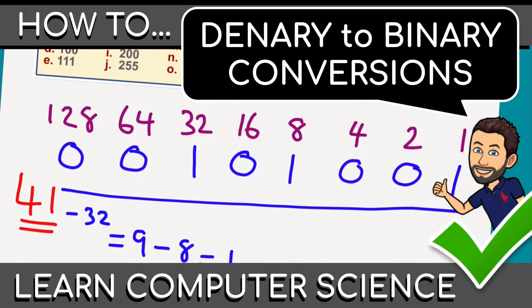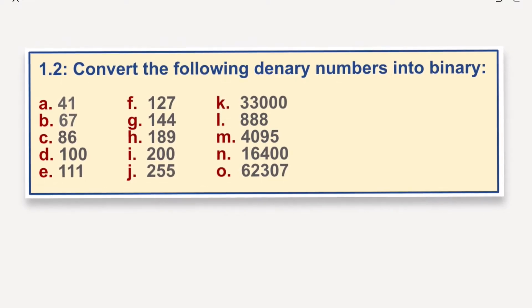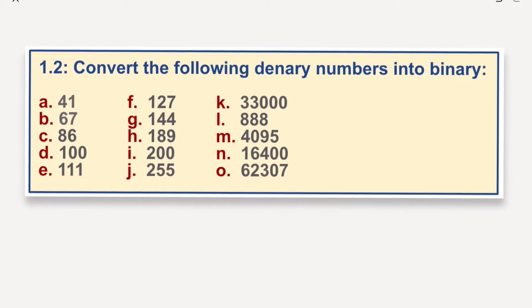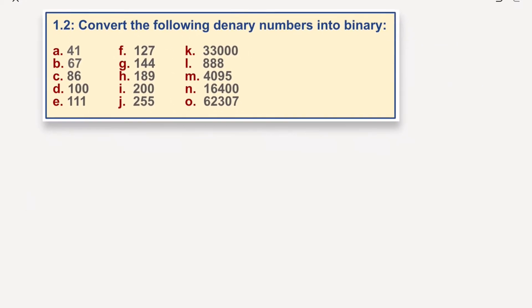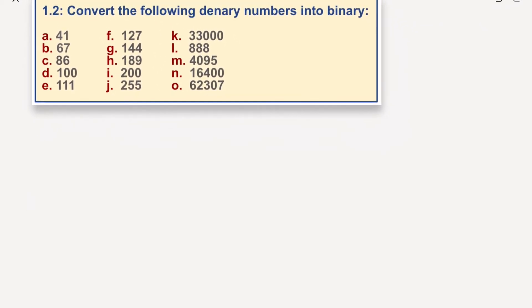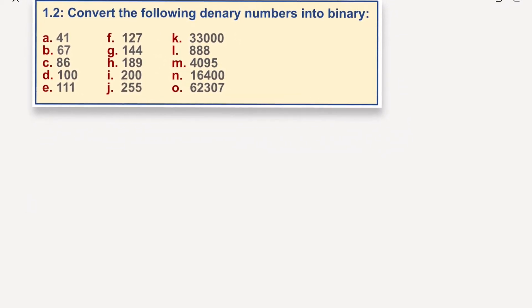We're converting the following denary numbers into binary and we've got several to have a go at here. Let's move this out of the way and we'll start with the first one, which will be 41.